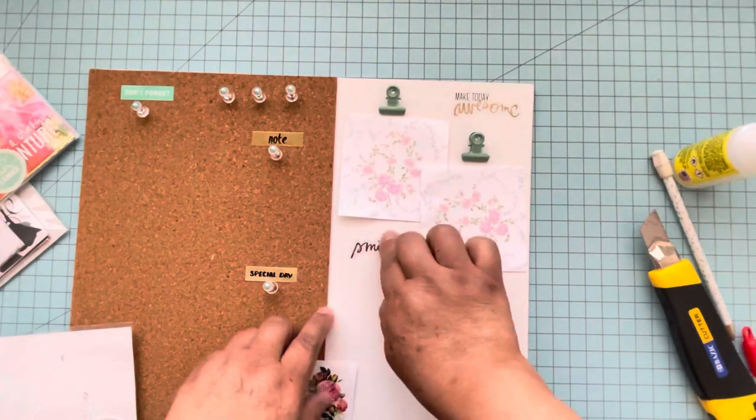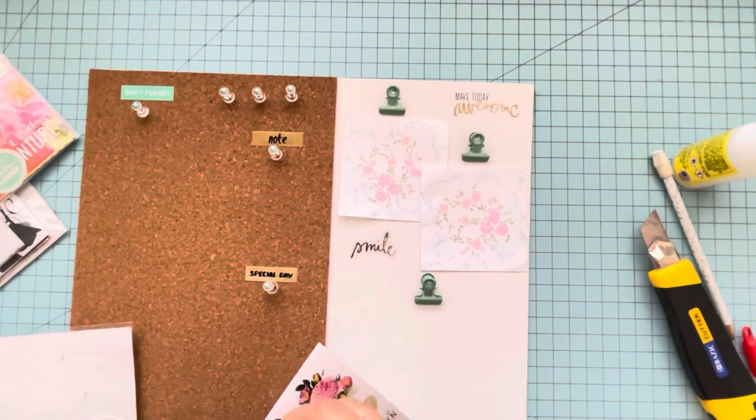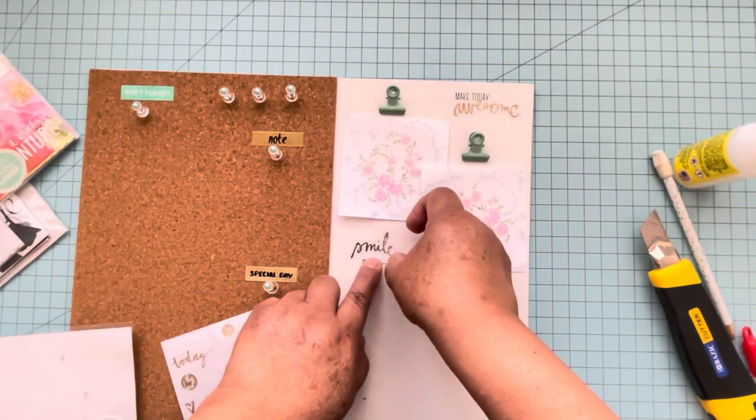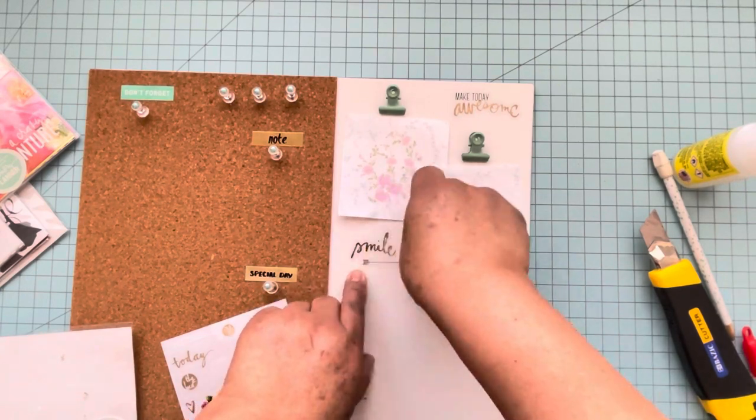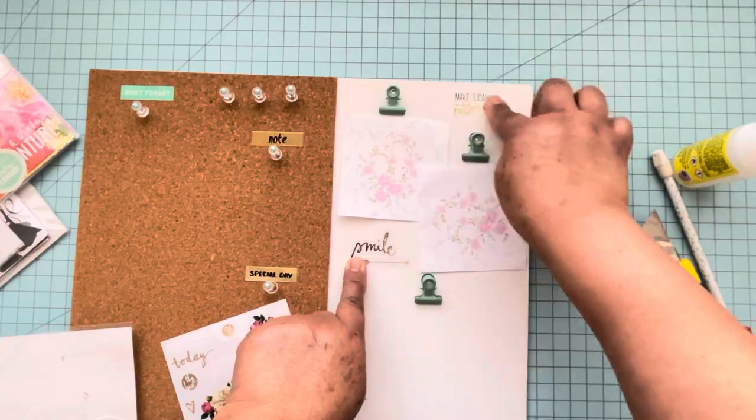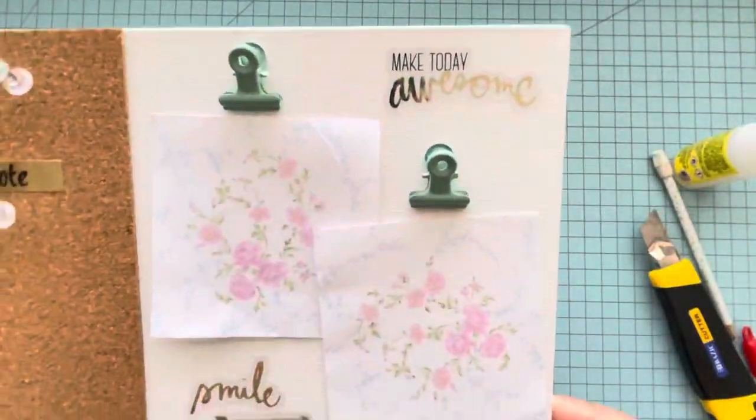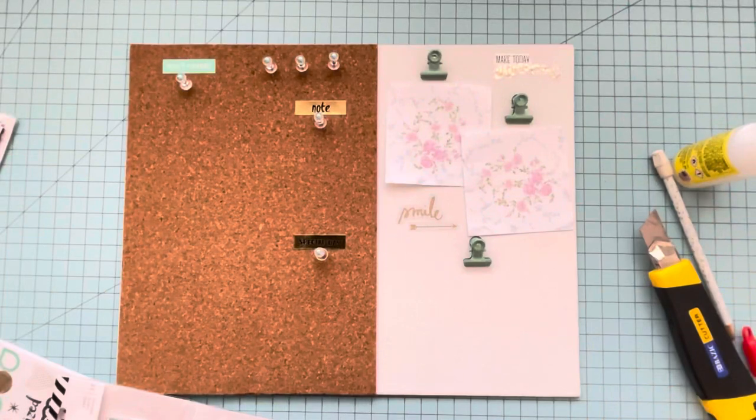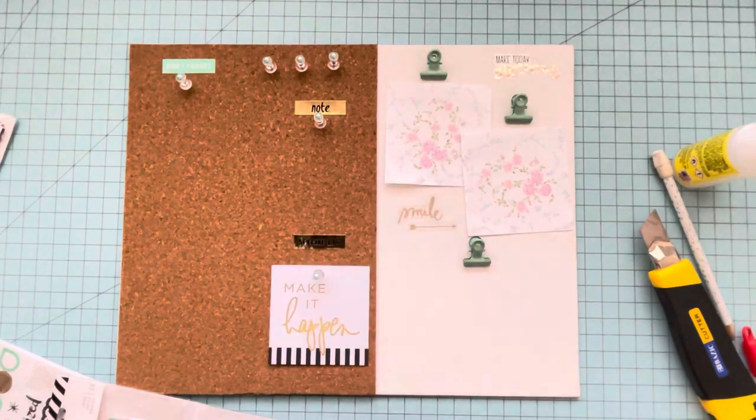You can just look for more embellishments. I looked for journal cards or planner stickers, and I found some more cards that I can put there. Look how beautiful it looks. Then I decided to put this one until I have something else to put there, and I even added a project life card. You can add pictures as well.